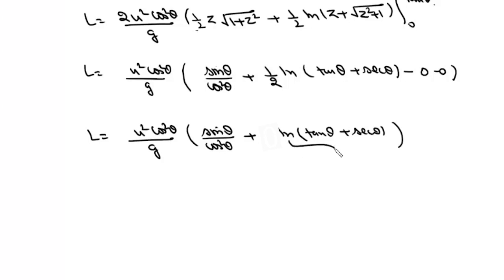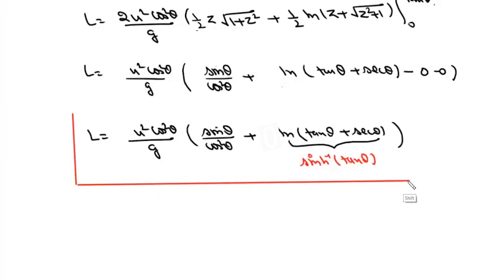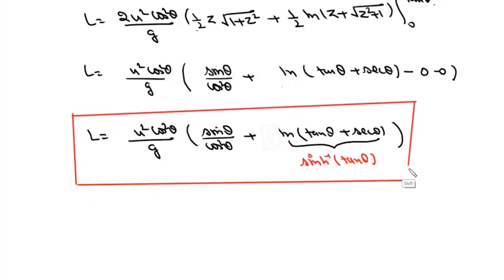And if we want, instead of writing it in terms of log, we can write it in terms of sinh⁻¹, so it will be sinh⁻¹(tan θ). This is the formula for arc length of a projectile. Since this formula is complicated, we don't usually study it, but proving this formula is definitely a delight.